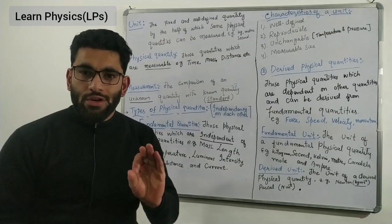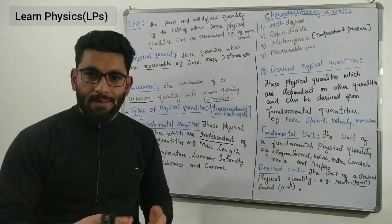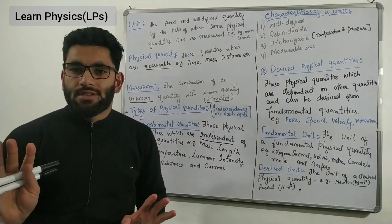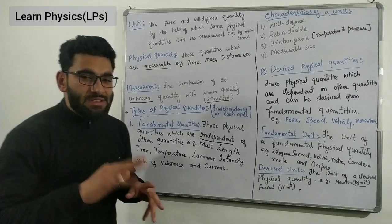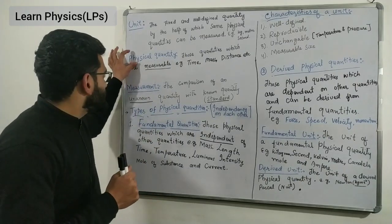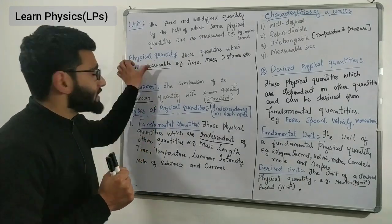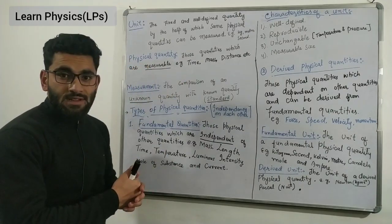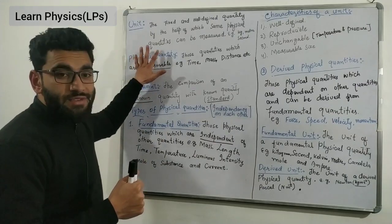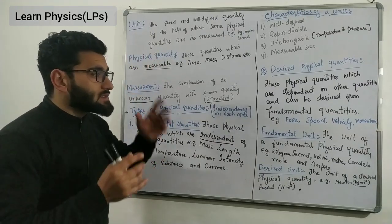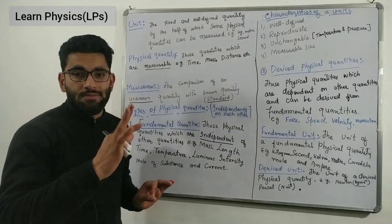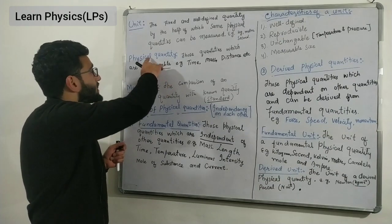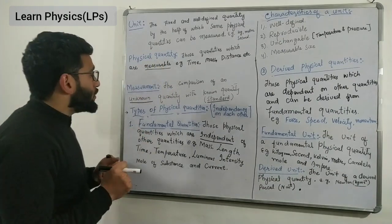Basically we have two types of quantity. The first type is those quantities which can be measured by applying physics laws. The second type is those which cannot be measured. Simply, the quantity which can be measured — we call that a physical quantity. So all those things which we study in physics are called physical quantities — they are simply those quantities which are measurable.